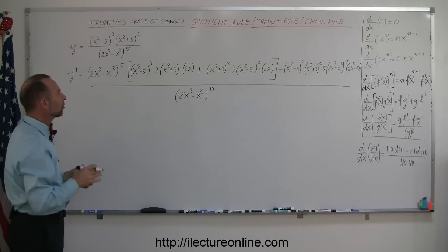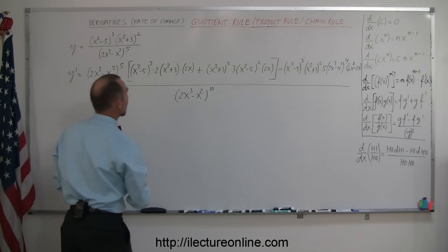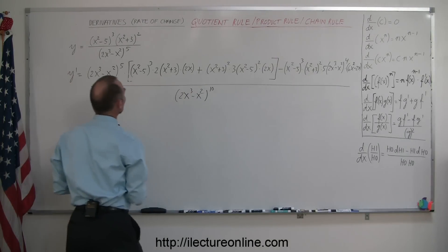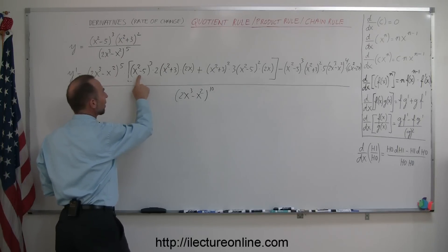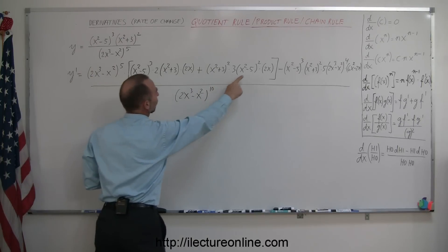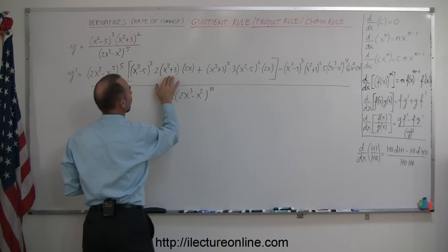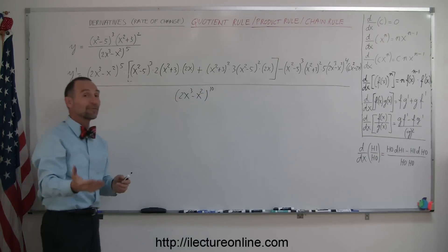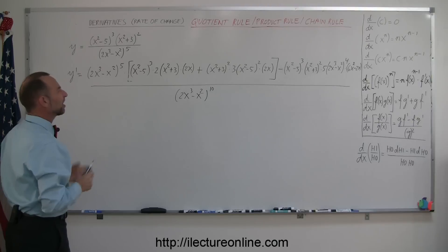We probably now want to simplify it if we can. If you look at what's inside the brackets, is there something that's common? Yes, there is. There's an x squared minus 5 and another x squared minus 5 — that's common. We have an x squared plus 3 and another x squared plus 3 — that's common. We have a 2x and a 2x — so that's all common, and we can factor all that out.